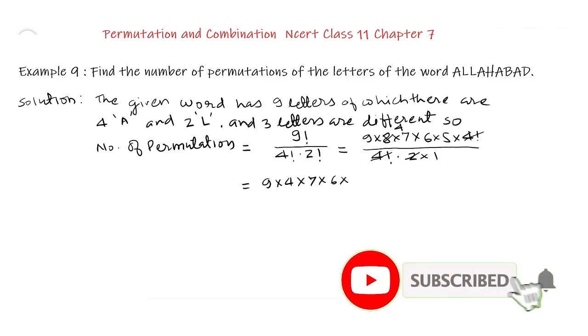This is equal to 9 multiplied by 4 multiplied by 7 multiplied by 6 multiplied by 5. We first multiply 9 and 7, this comes out to be 63 multiplied by 4 multiplied by 6 into 5 is 30.